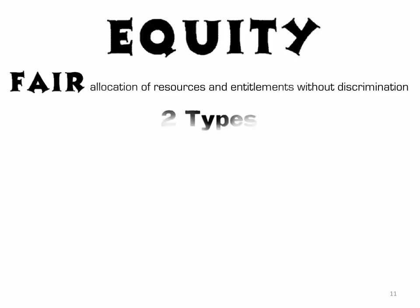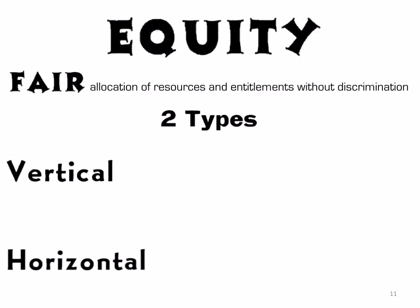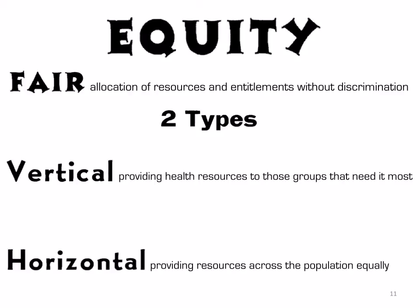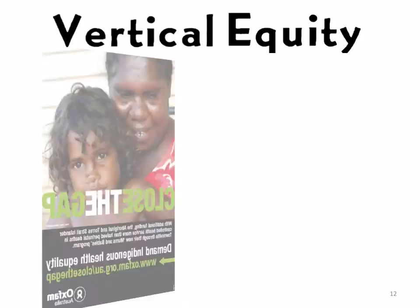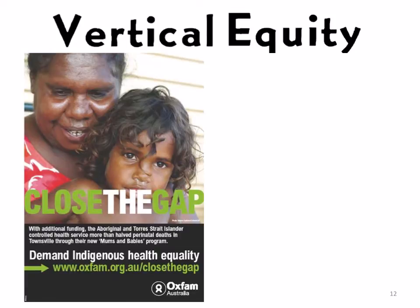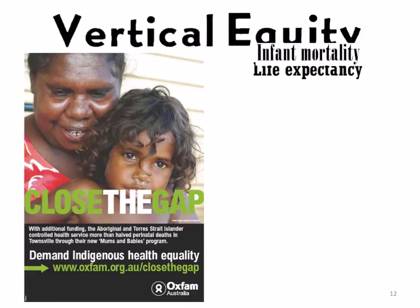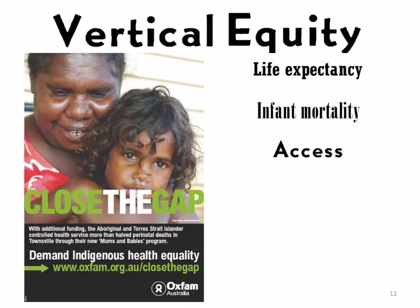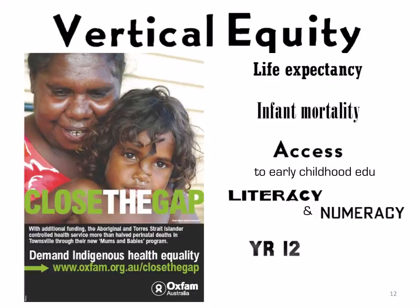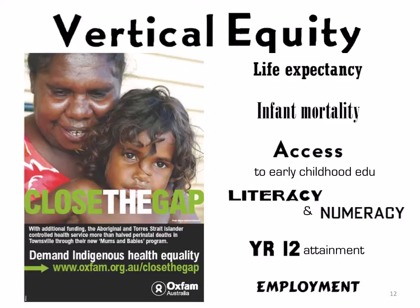Equity involves the fair allocation of resources and entitlements without discrimination. Vertical equity is providing health resources to those groups that need it most, such as the Aboriginal and Torres Strait Islander group. Horizontal equity involves providing resources across the population equally. The Close the Gap initiative is implemented by the Australian government to reduce the life expectancy gap, infant mortality gap, increase access to early childhood education, improve literacy and numeracy levels, Year 12 attainment, and employment in the Aboriginal and Torres Strait Islander community. This is a great example of vertical equity.